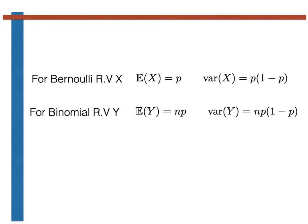In particular, notice that the expectation and variance for a Bernoulli random variable capital X are p and p times 1 minus p. The expectation and variance for a binomial random variable capital Y, meanwhile, are np and np times 1 minus p. You may have noticed that the expectation and variance of the binomial random variable are equal to the expectation and variance of the Bernoulli random variable multiplied by n.